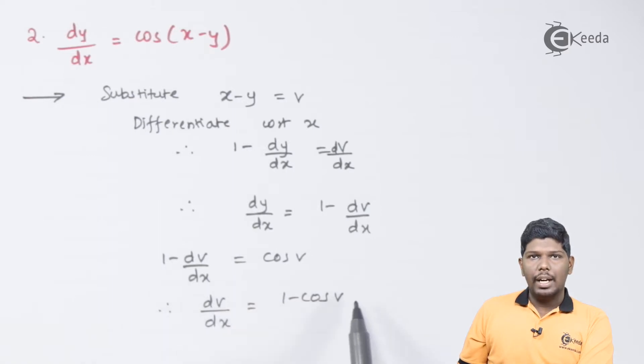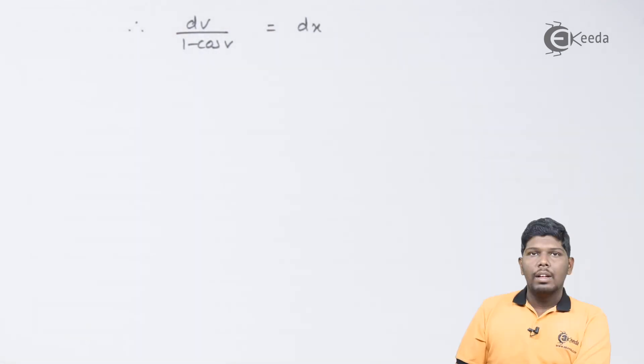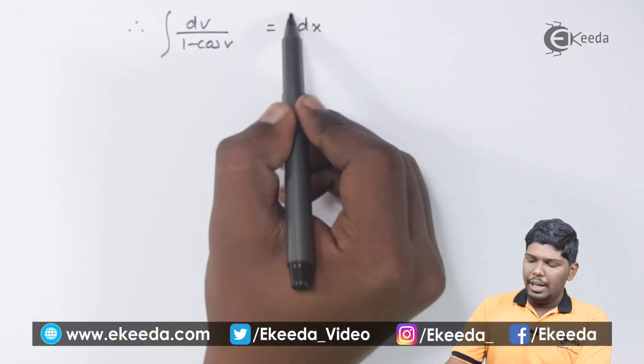So the value of dv by dx will be 1 minus cos v. Taking dx on the right hand side and 1 minus cos v will be divided on the left hand side, and after that we can directly integrate. Once our variables are separated, we are ready to integrate.